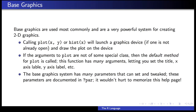The most fundamental function in the base graphics system is the plot function. Usually you call plot with two arguments — a vector X and a vector Y — where X specifies the X coordinates and Y specifies the Y coordinates for the two-dimensional plot. Another function is hist, which takes a single argument and produces a histogram showing the distribution of a numeric vector X. Both of these functions will launch a graphics device if one is not already open. If the arguments to plot are not of some special class, the default plotting method is called, which has many arguments letting you set things like the title, x-axis labels, y-axis labels, and so on.